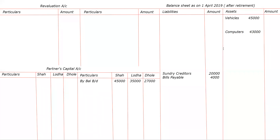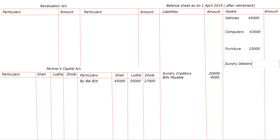Next is furniture — 25,000. Then sundry debtors. Sundry debtors — it is minus, so we will take the outer column amount: nine thousand.